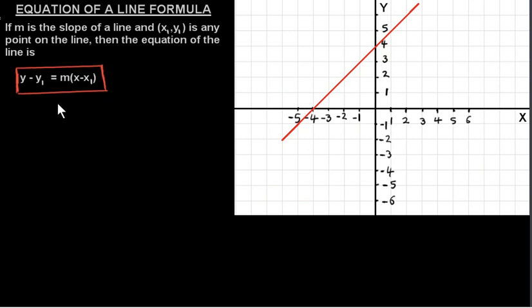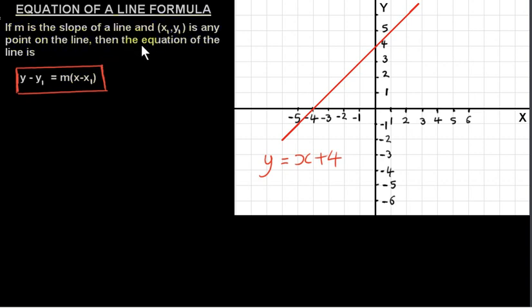Now the next thing we need to look at is how to get the equation of a line. We know the equation of this line is y equals x plus 4, but how do we actually arrive at this equation? We have a formula: if m is the slope of a line and (x1, y1) is any point on the line, then the equation of the line is y minus y1 equals m times (x minus x1). To use this formula, we need the slope m and any point (x1, y1) on the line.